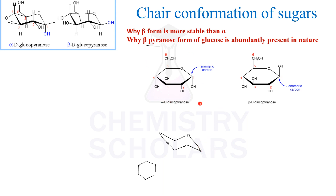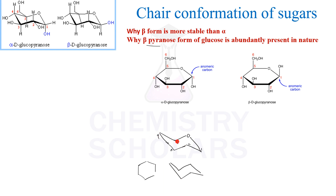Now it doesn't exist as drawn in the Haworth form — it exists in chair form. So this is called the chair form. Now how to draw the chair form: this is how chair form looks, but we have the heterocyclic oxygen here. We will place this oxygen here and start numbering each carbon atom. Always remember in chair forms there are equatorial and axial positions.